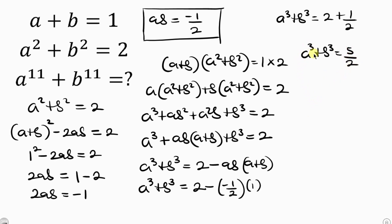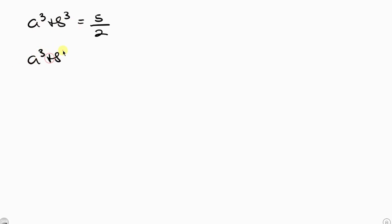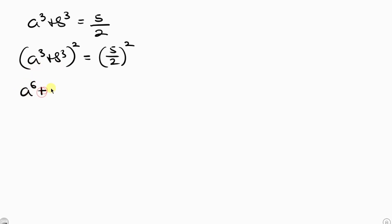Our next step will be to take a cubed plus b cubed and square both sides. Squaring the left hand side gives a to the power 6 plus 2 times (ab) cubed plus b to the power 6.